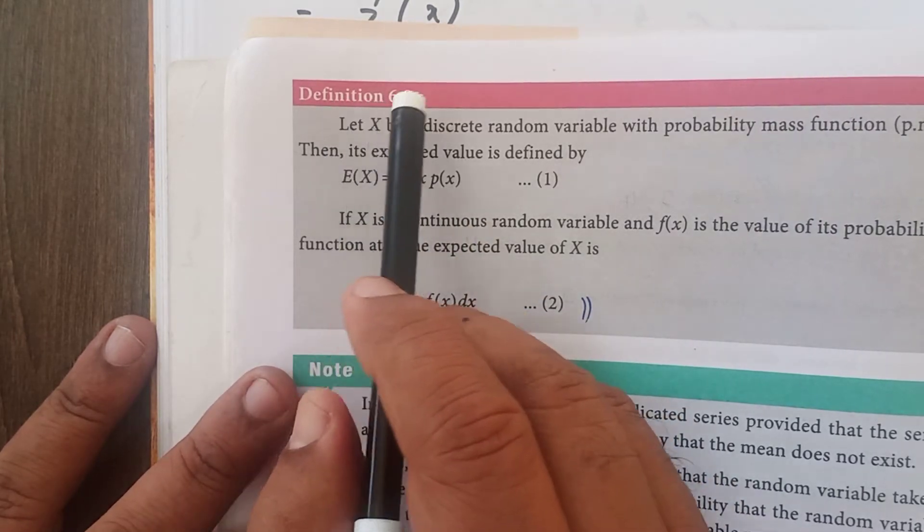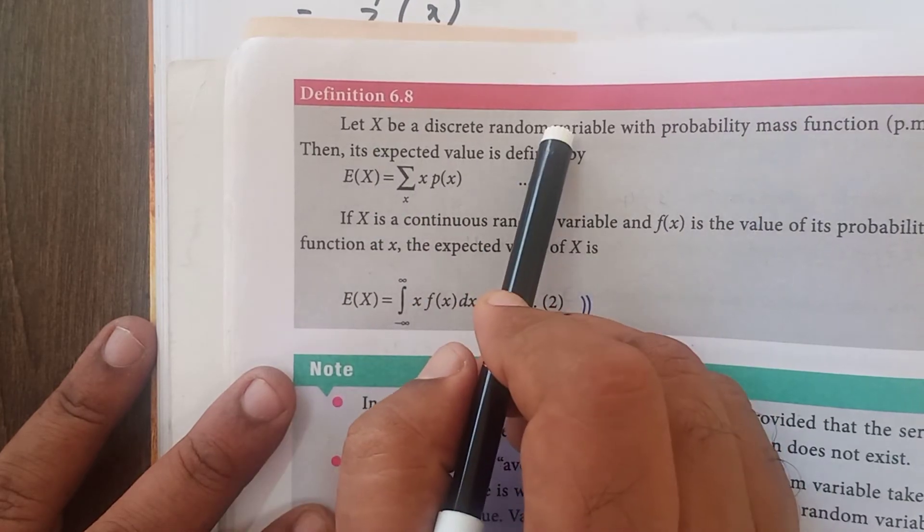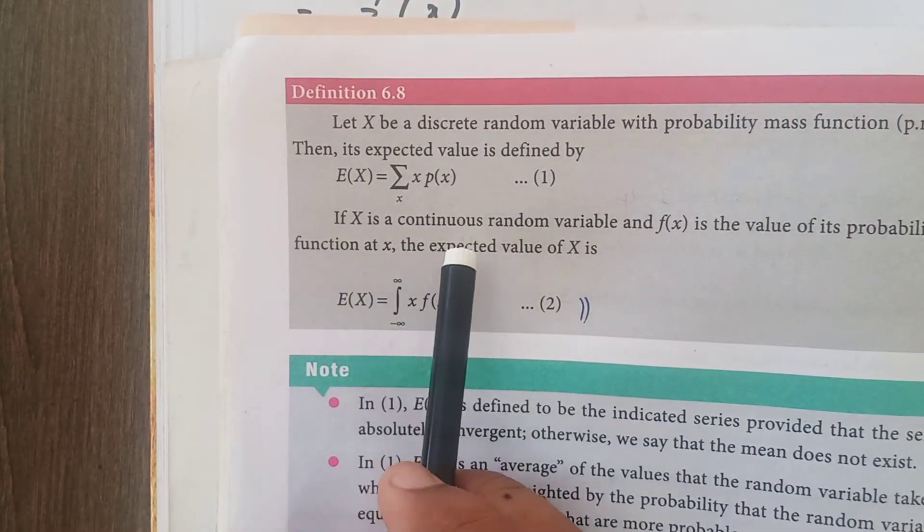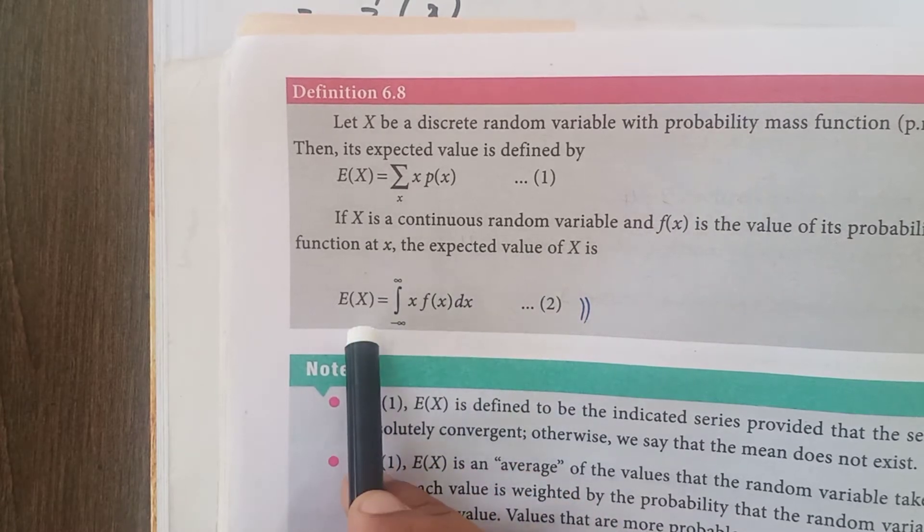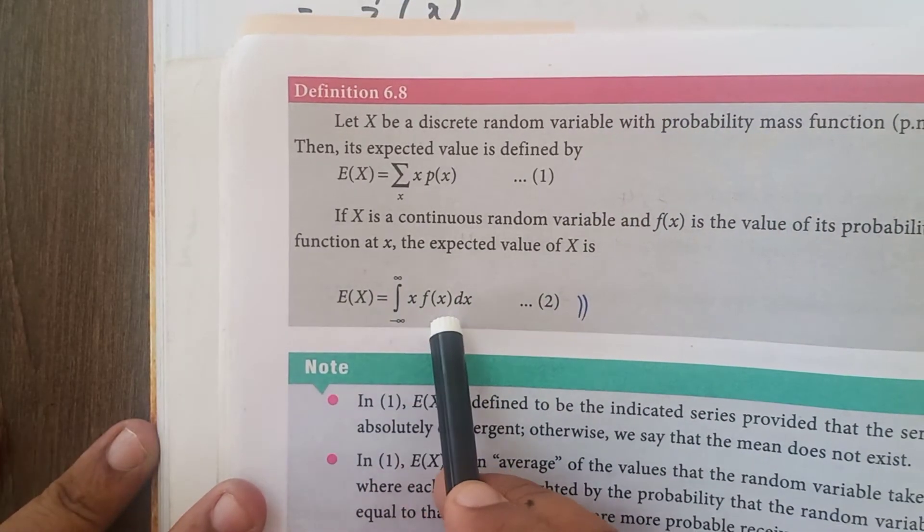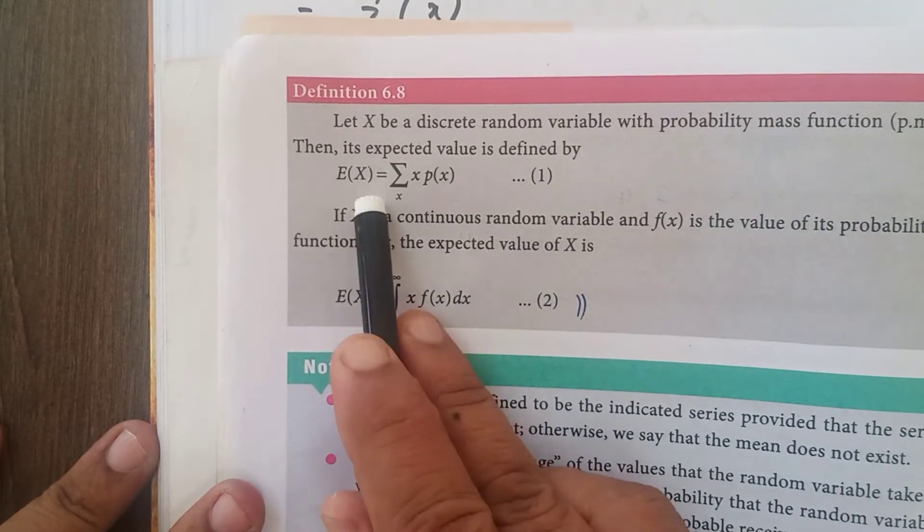If capital X is a discrete random variable, then suppose if x is a continuous random variable, expectation of x formula is minus infinity to plus infinity x into f of x dx. Note out these two formulae.